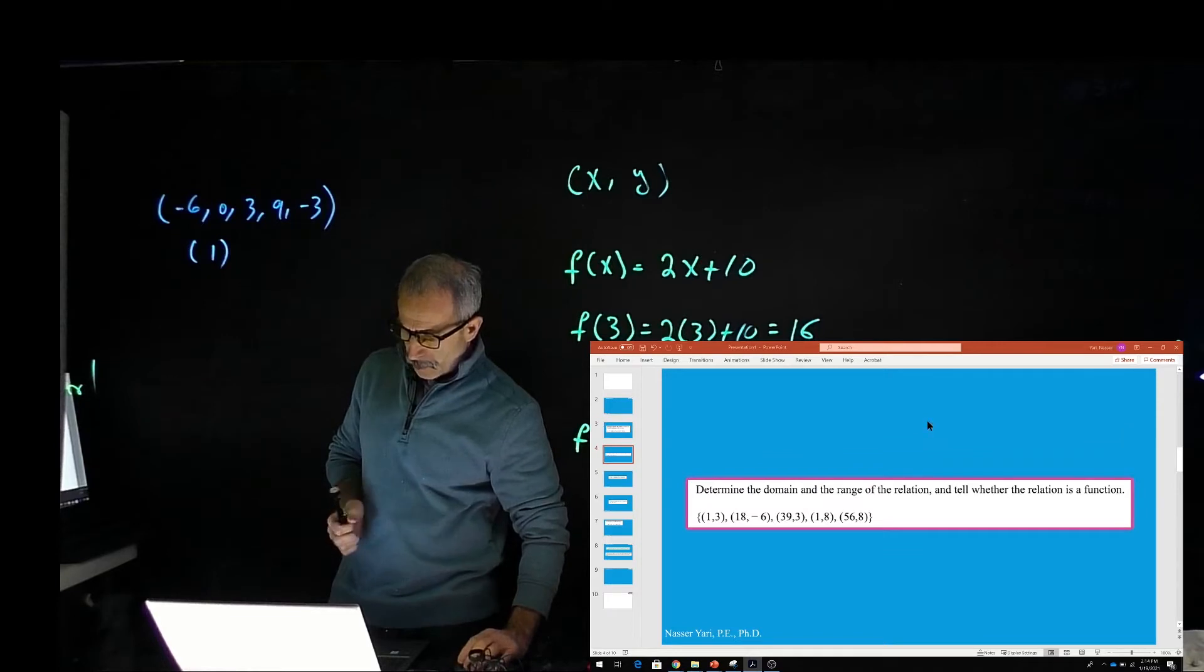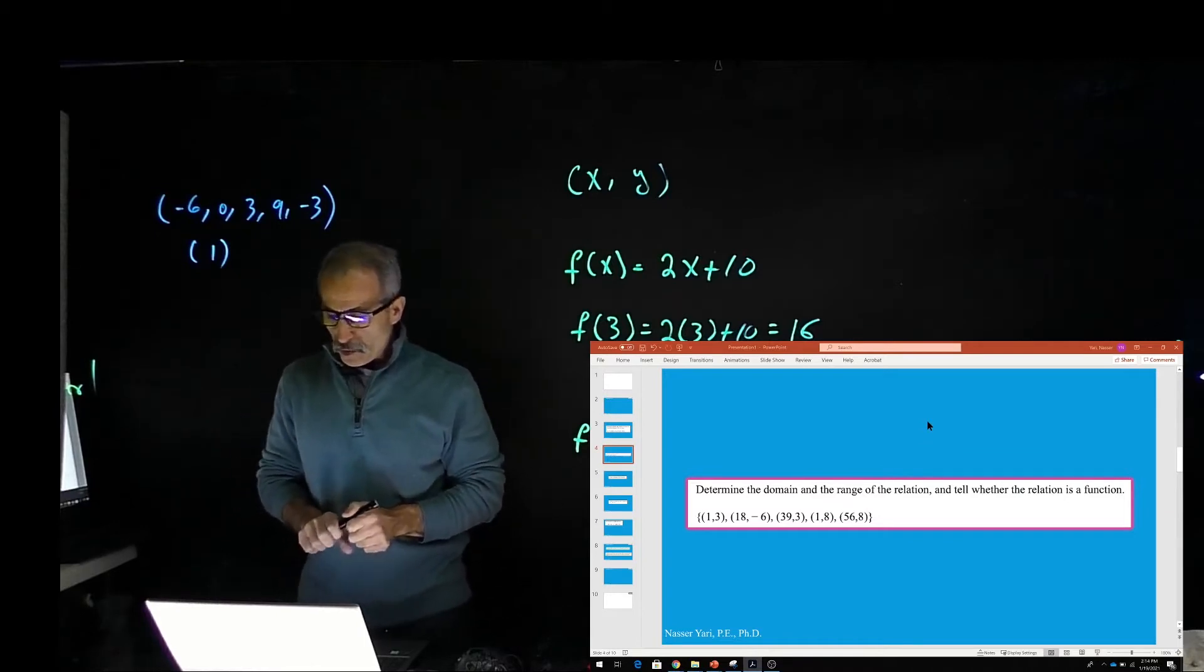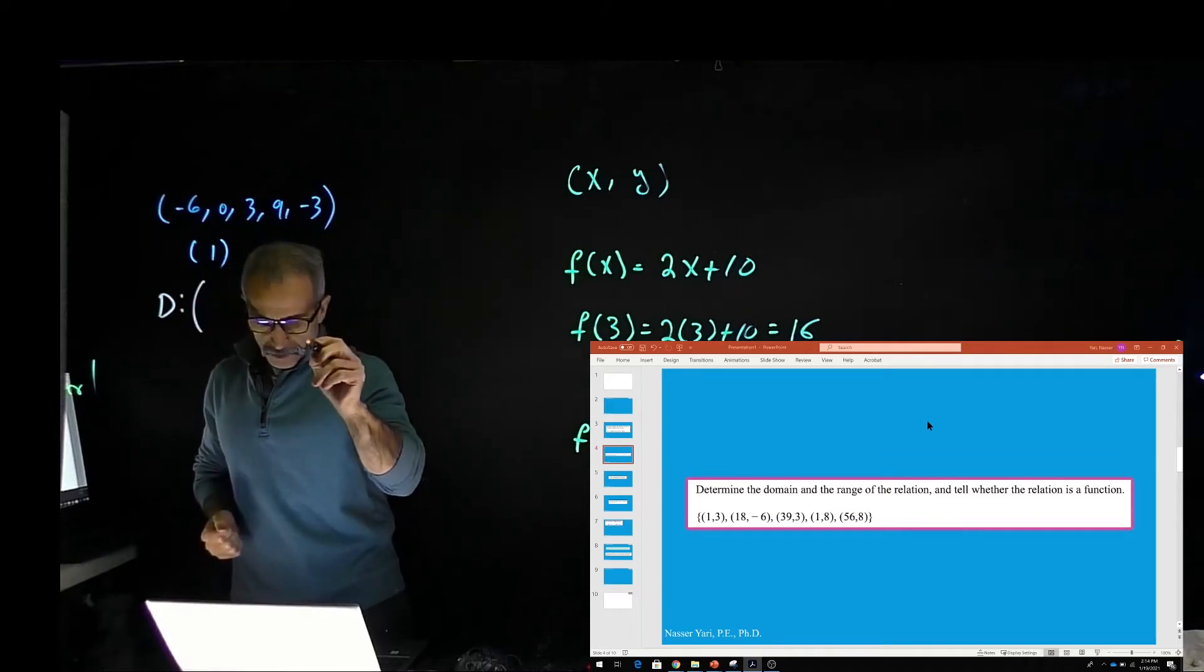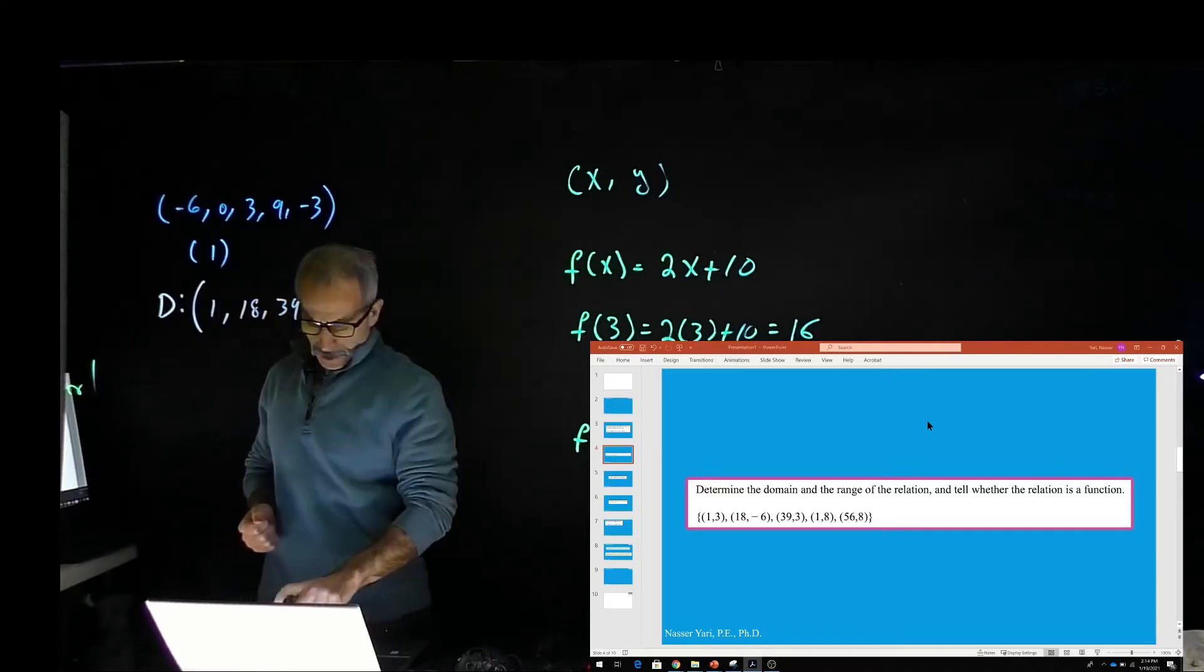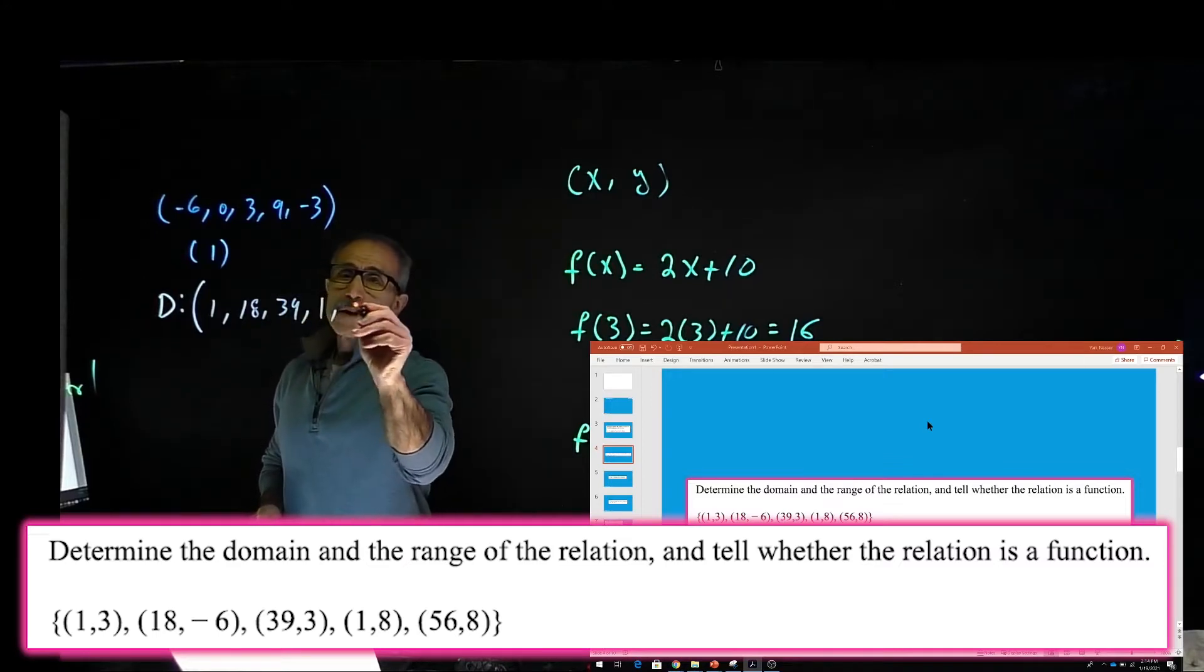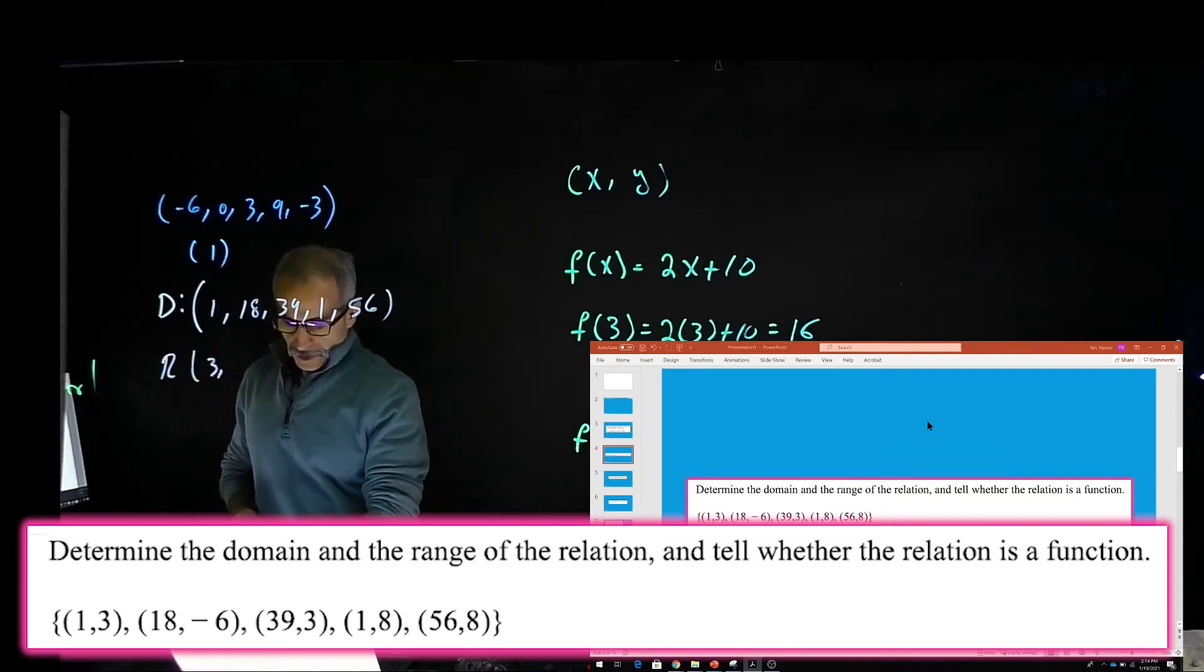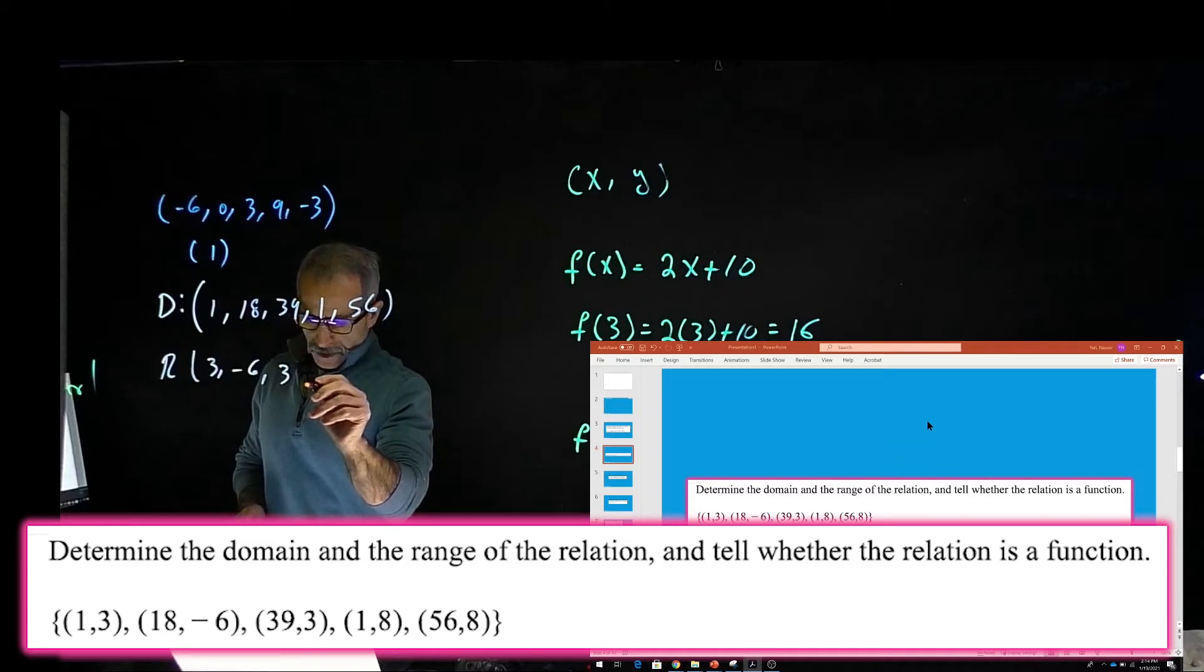Let me bring that up. How about this one? So now we have (1,3), (1,18)... Let's find out the domain. The domain of that function is going to be 1, 18, 39, 1, 18, 39, 1, and 56. You notice 1, we have it twice. And the range for it is 3, -6, 3 again, 8, and 8.